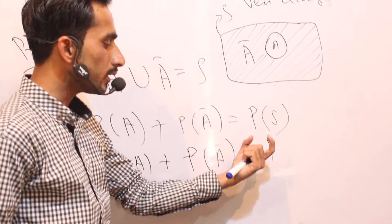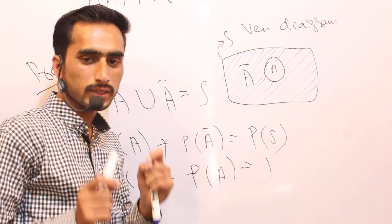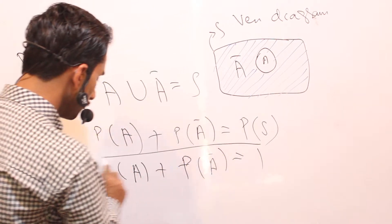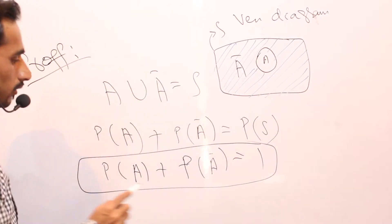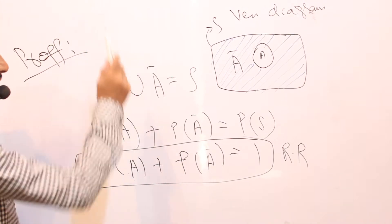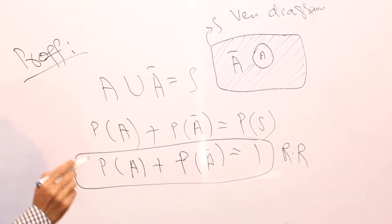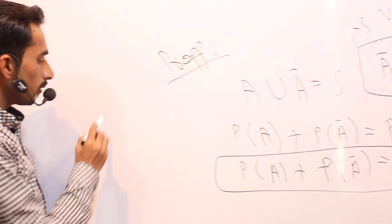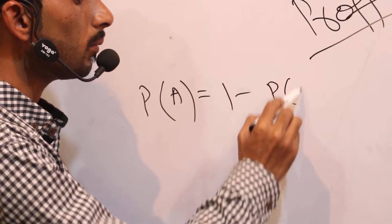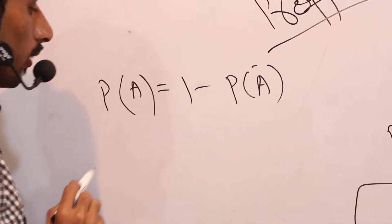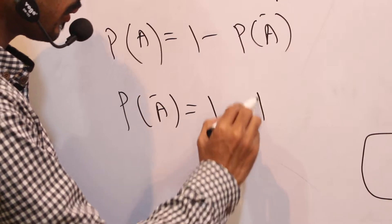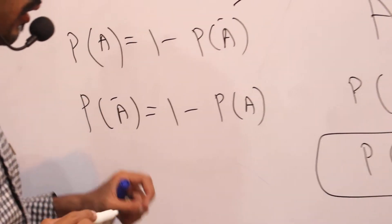So probability of A plus probability of A-bar is equal to one, because the probability of the sample space always equals one. This is the required result of the theorem. It can also be written as probability of A equals one minus probability of A-bar, or probability of A-bar equals one minus probability of A.